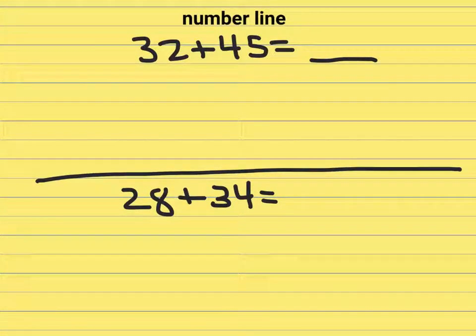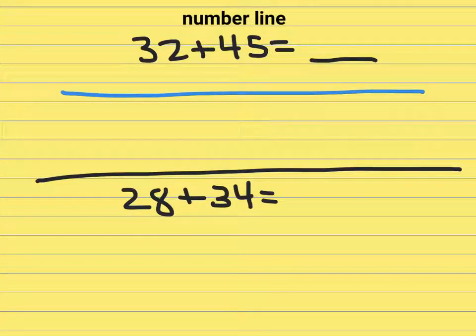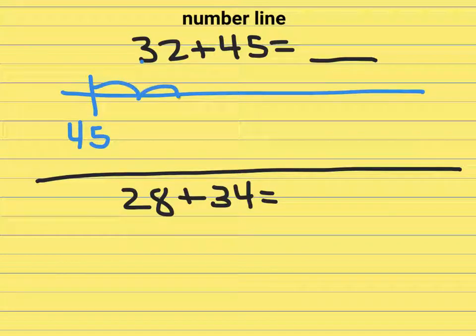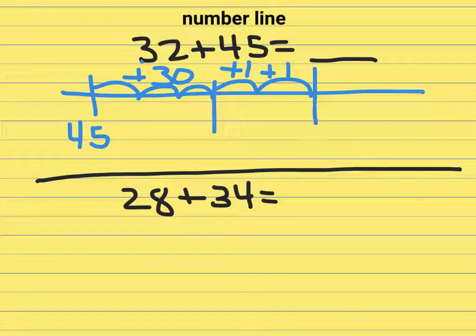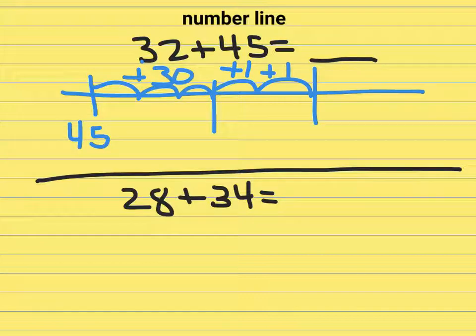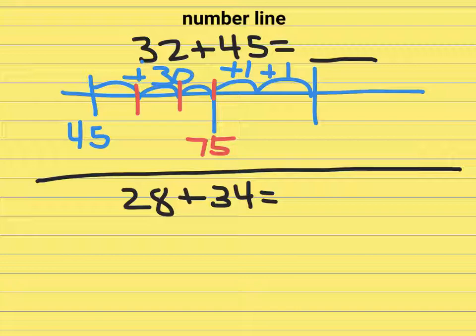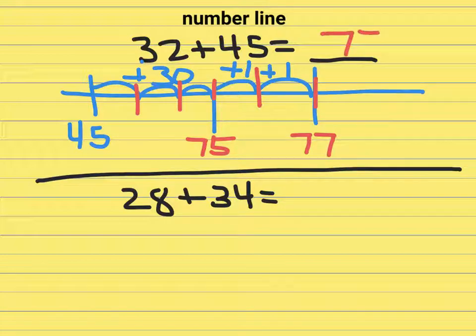Now we are going to solve an addition problem on a number line. So we're going to create an open number line. We'll start with the number 45, the larger of the two addends. I will now jump three tens: ten, twenty, thirty. So these jumps each represent tens, they all represent 30. And then two more, that's one jump and one jump. So from 45 I'll count up: 55, 65, 75. Now I need to switch over to count by ones: 75, 76, 77. So that's my answer for that one.